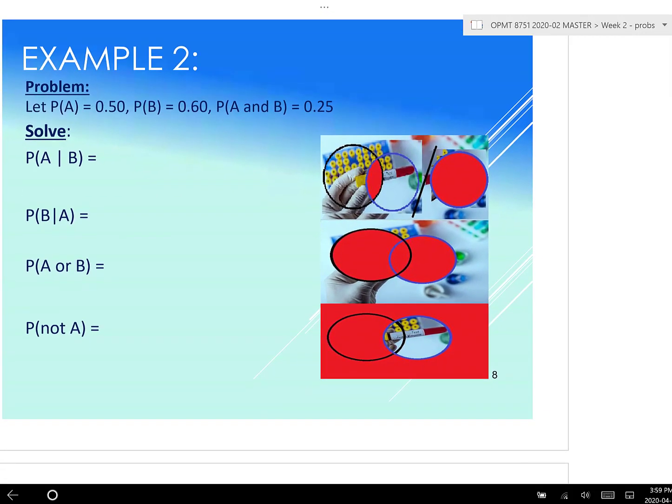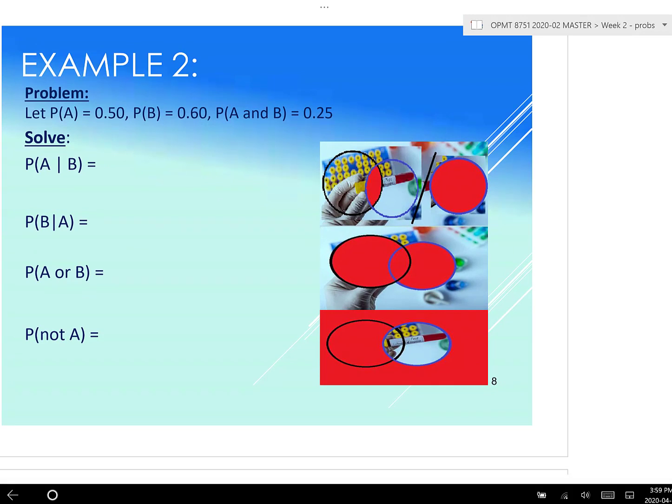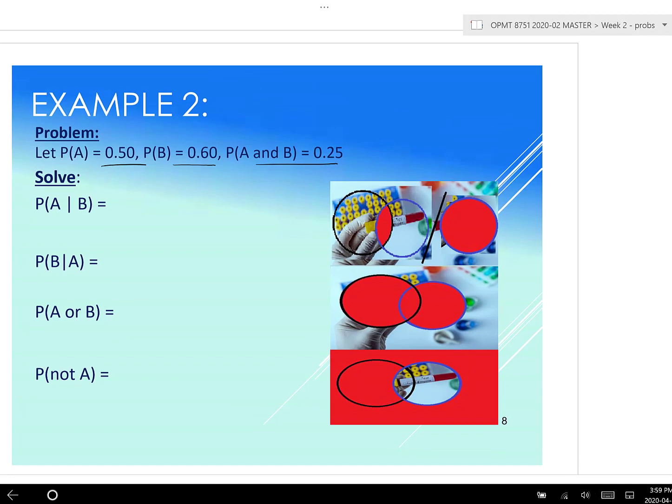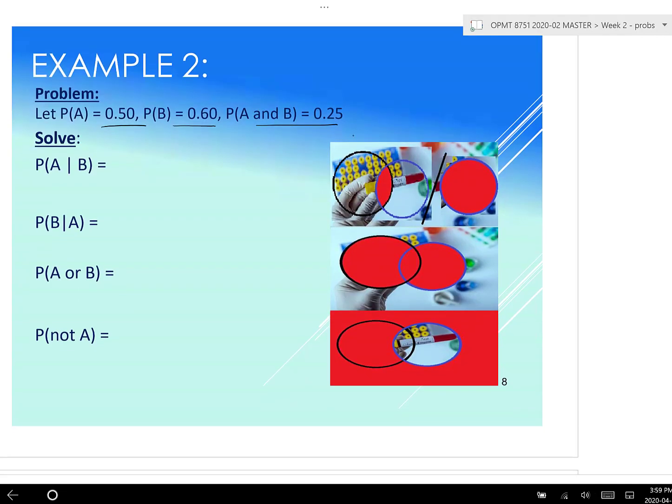Example number two. Let's say now we have probability of A is 0.5, probability of B is 0.6, and probability of A and B is 0.25. Beautiful. Okay. So let's call this now, sorry about that. Let's call this B, let's call this A, because A is a bit smaller.